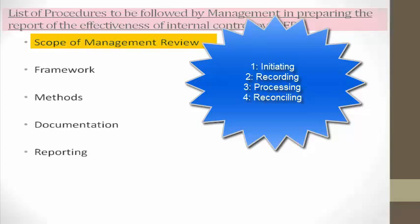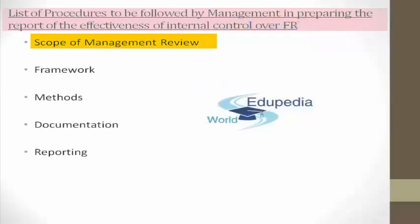Next: selection and application of appropriate accounting policies. The company preparing financial statements would be adopting certain accounting policies, and the selection and application of appropriate accounting policies will also be covered under the scope of management review. Finally, the prevention, identification, and detection of fraud. It is under the scope of management review that they need to assess whether there are chances of prevention, identification, or detection of some fraud going on.